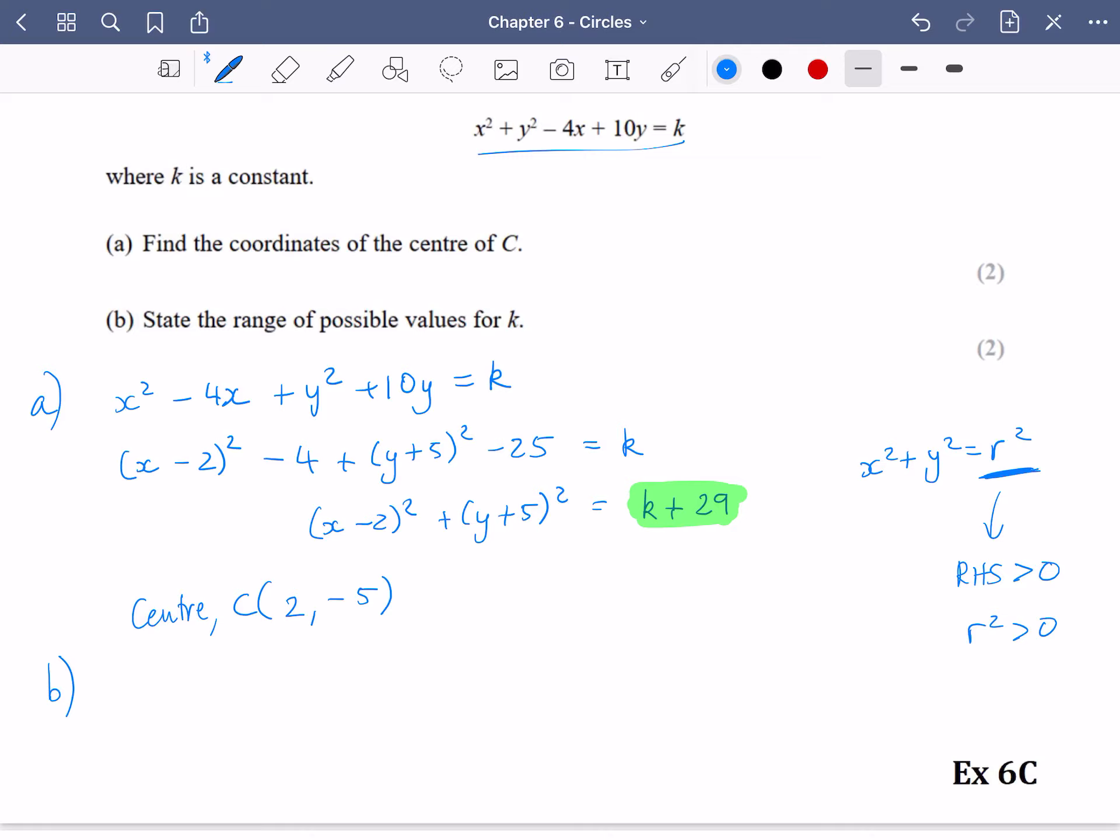In other words, it would just be a dot. So this means that this section that I've highlighted in green, k + 29, has got to be bigger than zero in order for it to be a circle, which means that k has got to be greater than -29.